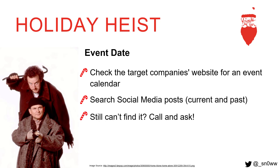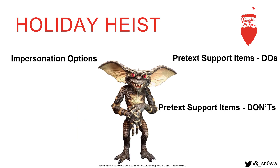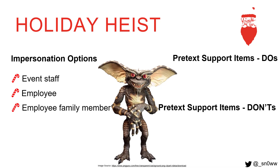If you still can't find it, call and ask. You can impersonate a local catering company and say you wanted to confirm the time, and hopefully they'll give you the time and date. Now we have to figure out who we're going to be pretending to be — event staff, an employee, or a family member of an employee? Once we have that picked out, we need pretext support items: are there any uniforms in place? And trappings — if we're pretending to be an employee, do they have a badge and what does it look like? Not just the badge alone: is there a lanyard, do they use clips, do they always clip it in a specific location? The more information we can find during OSINT to look the part, the more we'll be able to pull this off.